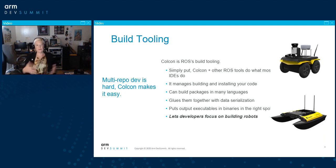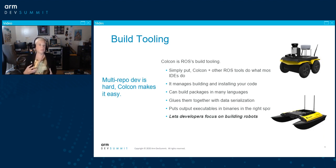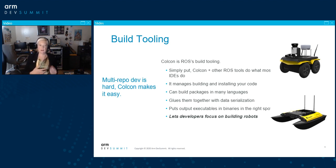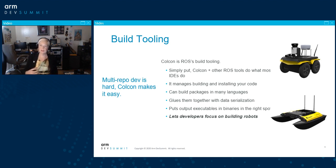Let's start with the build tooling — I think this is probably the most intimidating part of ROS. Colcon is ROS's build tooling. Simply put, Colcon plus the other ROS tools do what most people's IDEs do: it manages building and installing your code, can build packages in multiple languages, glues them all together, and puts the output executables and binaries in the right spot. It's a little intimidating, but at the end of the day it lets you focus on writing code and building robots.